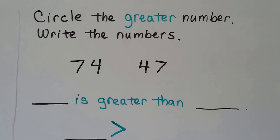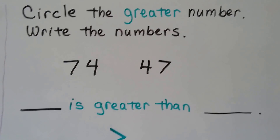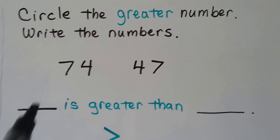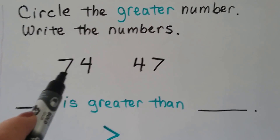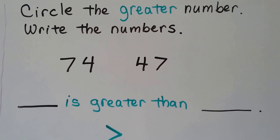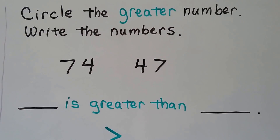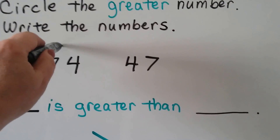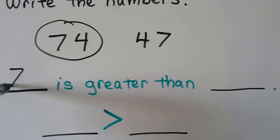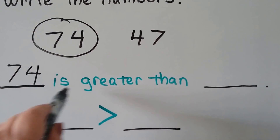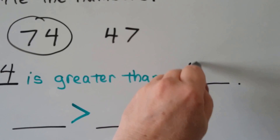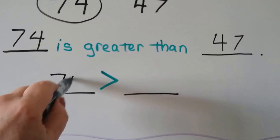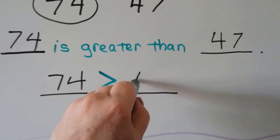Circle the greater number and write the numbers. Which is greater, 74 or 47? We look at the tens — 74 has seven tens, 47 has only four tens. The greater number is 74. 74 is greater than 47. We can write it with the symbol: 74 is greater than 47.